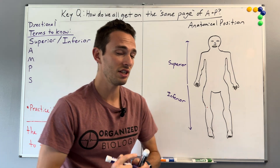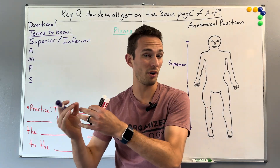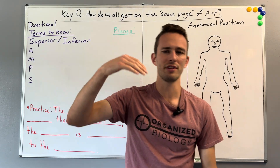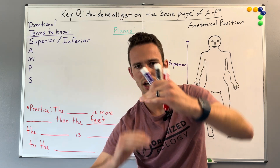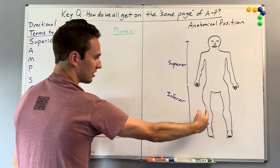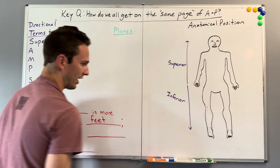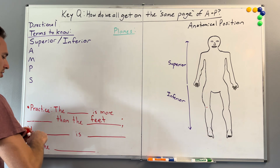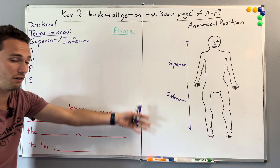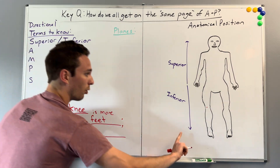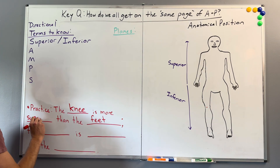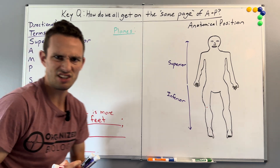When we use these terms, we're relating one part of the body to another, just like referencing the second drawer below the top drawer — you're comparing it to something else. So if I take the knee and the foot, we could say the knee is more superior than the feet. Does that make sense? The knee is more superior than the feet.